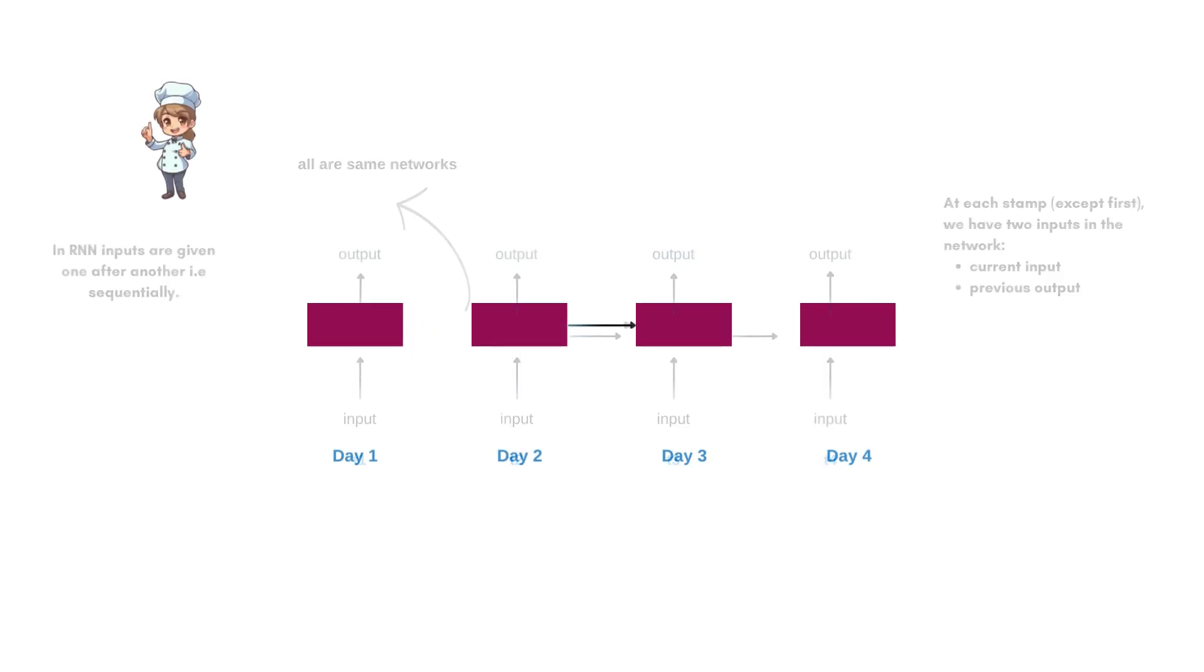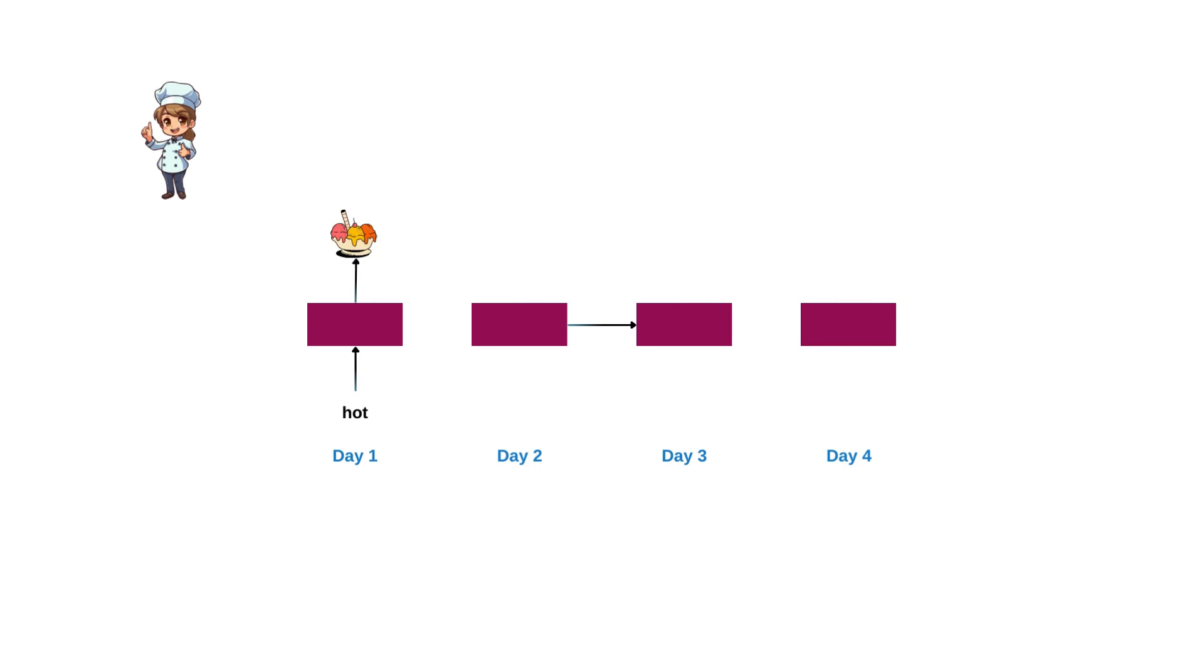So, for our chef example, say the first day, the weather is hot, so you make ice cream sundae. Then the next day, the weather is hot only. But the previous output is ice cream sundae, so we cook a different dish, say salad.